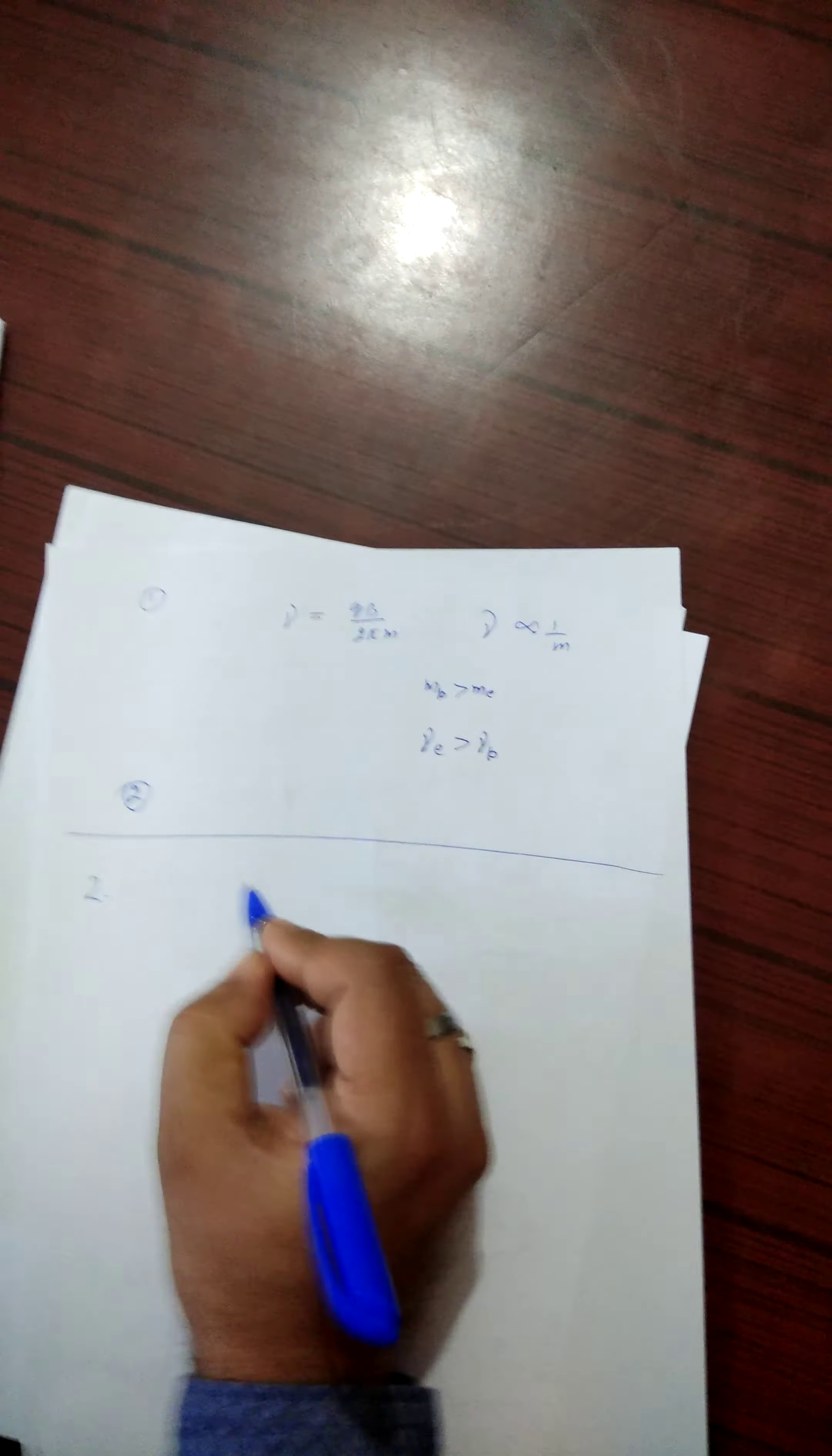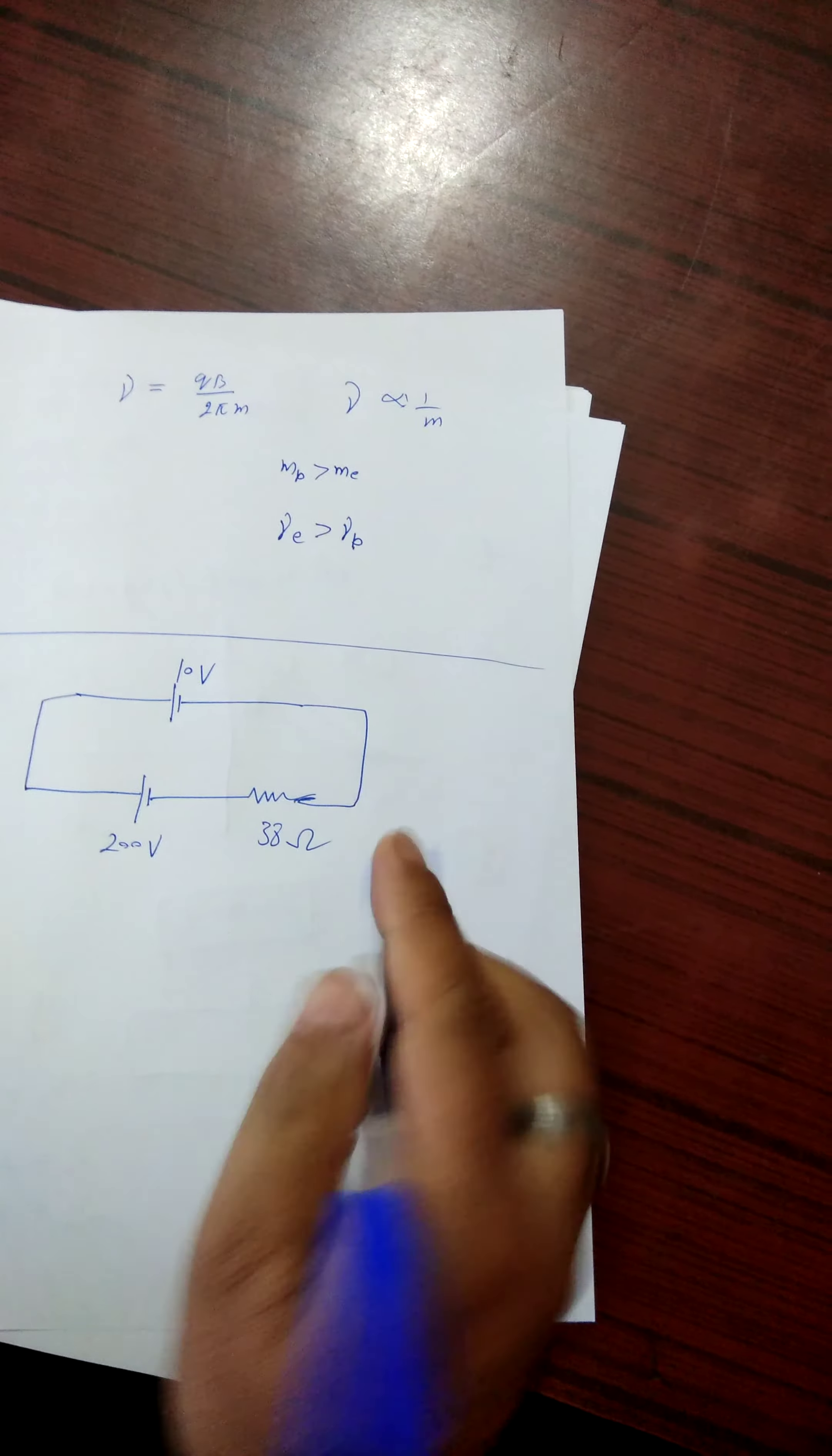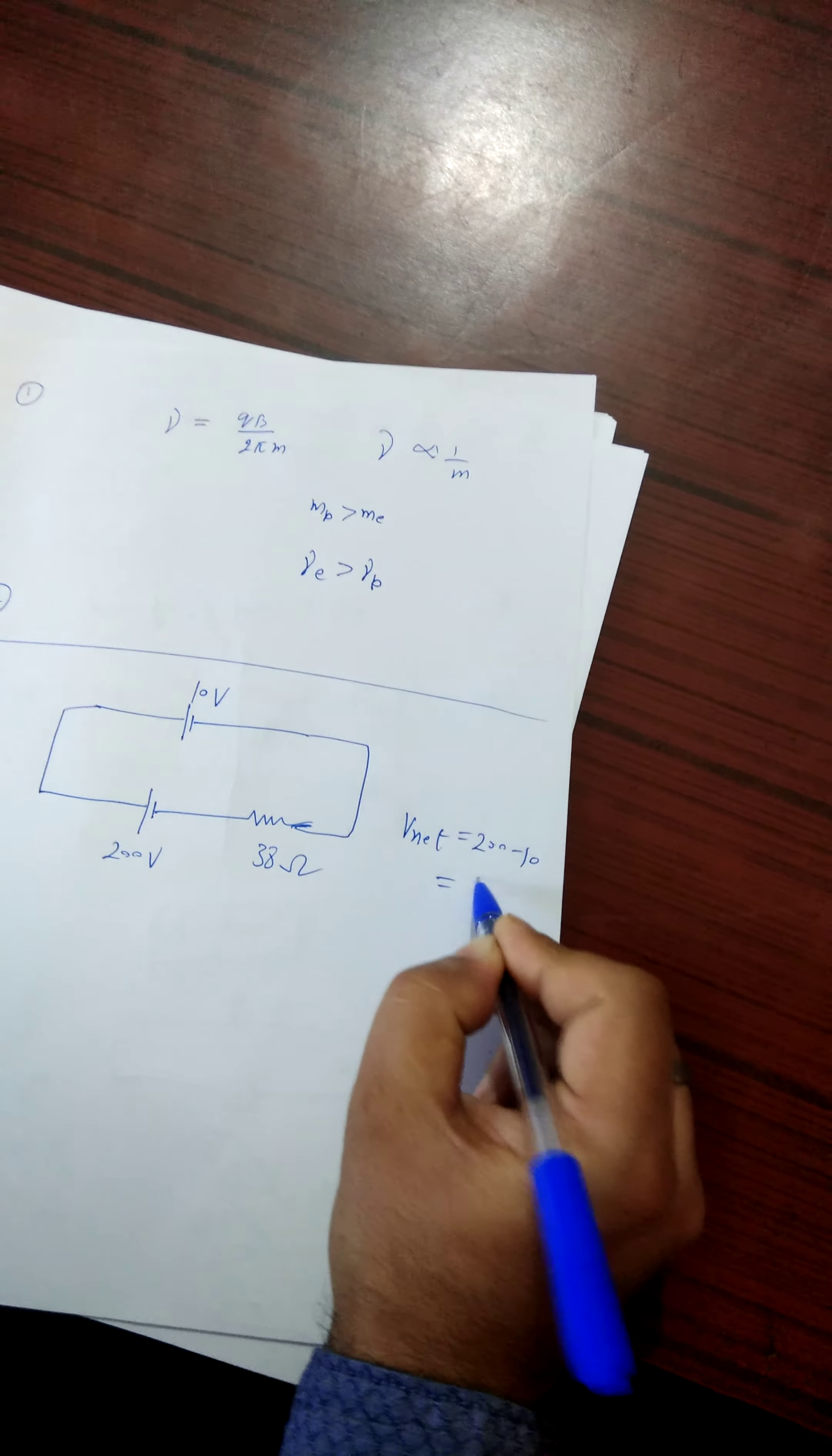Here the circuit is given. This is second, 38 ohm, 38 ohm, 200 volt, 10 volt. So we can see that these two batteries are providing currents in the opposite directions in the circuit. Therefore, net voltage is given by 200 minus 10, that is 190 volt.